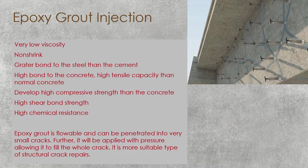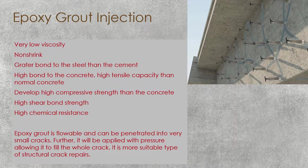When you have a crack, nozzles are fixed along the crack, and the crack is sealed between these nozzles. Starting from one end, epoxy grout is injected until it comes out from the next nozzle. Once it starts coming out from the next nozzle, the first one is closed and injection moves to the second nozzle. This is repeated — injecting until material comes out at the next nozzle — until the whole crack is sealed.